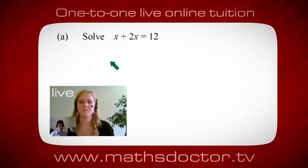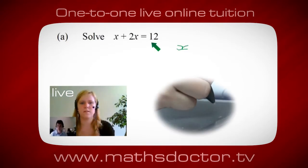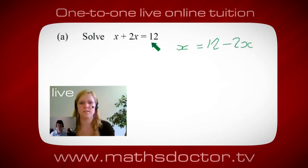Okay Marie, so let's have a look at this one. So solve x plus 2x equals 12. So what do you think you do first? Okay, well I want x on its own, so I would put x equals 12 minus 2x.